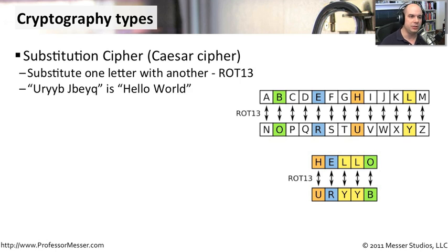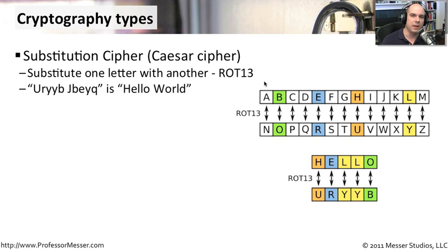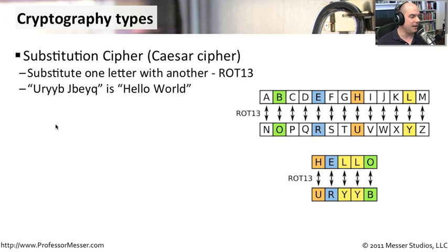One common encryption method is the substitution cipher, one of the oldest methods of encrypting data. This is also called Caesar's cipher, as Caesar originated and popularized this method. He took a normal alphabet and shifted all the letters by a certain number. A very common example is ROT13 — you rotate 13 steps to the right, so instead of writing A you write N, instead of B you write O. As long as you know the number 13, you can encrypt and decrypt a message with that key. This would turn a funny-looking message into 'hello world.'